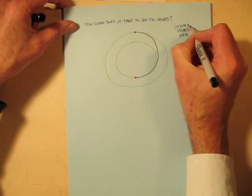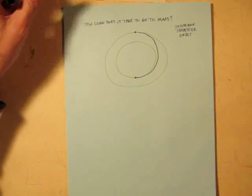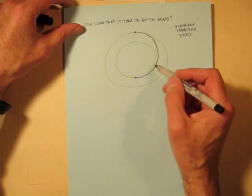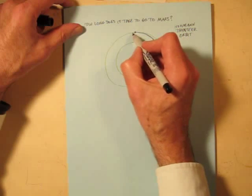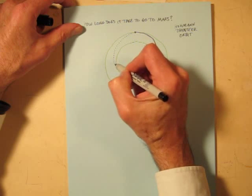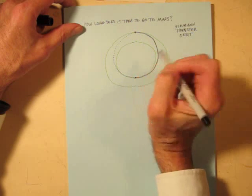So this is called a Hohmann transfer orbit. And when you read more about space travel, you'll find Hohmann transfer orbits mentioned all the time. Anyway, since this is half of an ellipse, let me sketch in the rest here. We're not going to fly on that part at this point, but just to remind us that it's an ellipse.